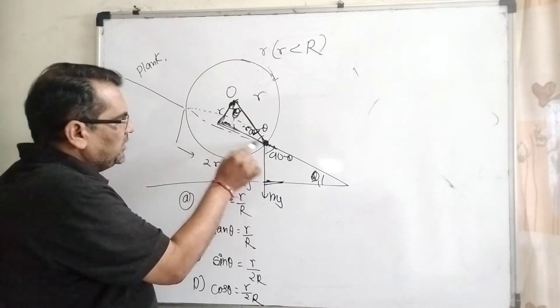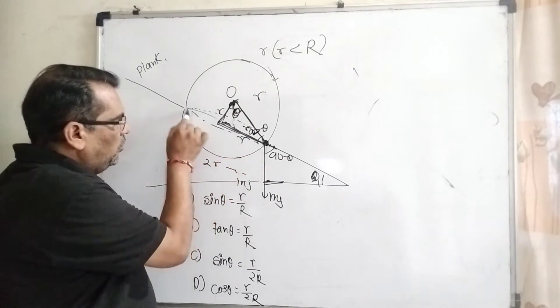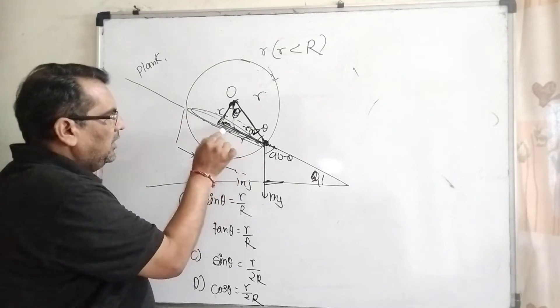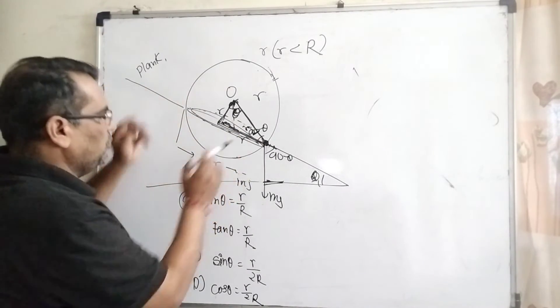Here this point is r because this hole has radius small r. The total distance is 2r.